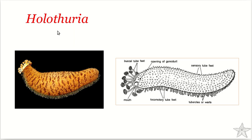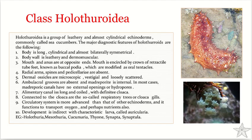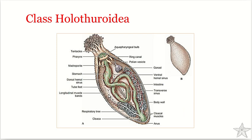Holothuria is a typical example under Holothuroidea. The ambulacral groove is long and coiled, with a definite cloaca. An important feature is the presence of respiratory trees, also called cloacal gills. Most sea cucumbers feed on organic matter using their oral tentacles, and the mucus covering the tentacles traps food as they sweep across the substrate or are held out in seawater. The digestive tract ends in a cloaca, which opens through an anal opening.